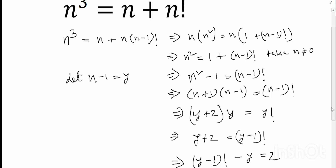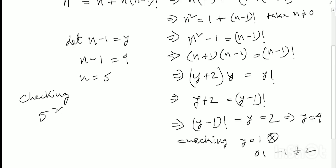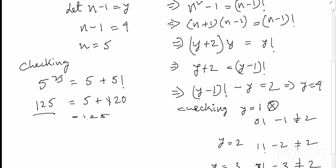Putting y equals 4 back: n minus 1 equals 4, so n equals 5. Let me verify: 5 cubed equals 125, and 5 plus 5 factorial equals 5 plus 120 equals 125. So the answer is n equals 5, and it is correct.